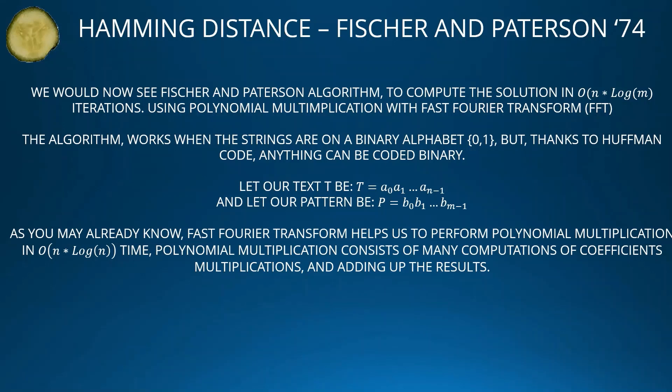Let our text T be T = A₀, A₁, …, A_{N−1} and let our pattern be B = B₀, B₁, …, B_{M−1}. As you may already know, the fast Fourier transform helps us perform polynomial multiplication in O(N log M) time.